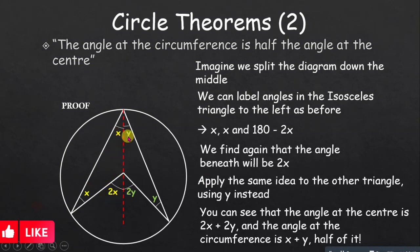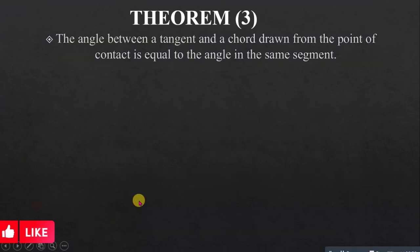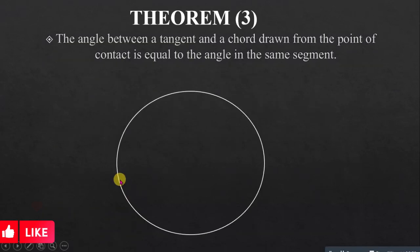This confirms: the angle at the circumference is half the angle at the center. If the circumference angle is x, the center angle is 2x; if the circumference angle is y, the center angle is 2y. That completes the proof.